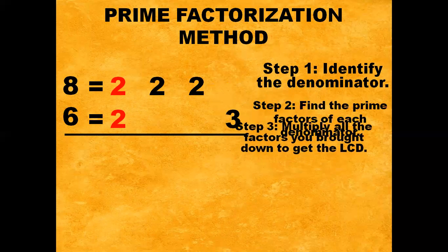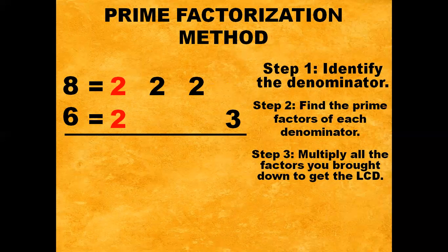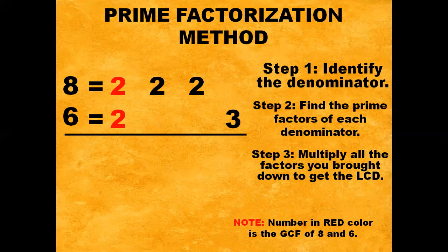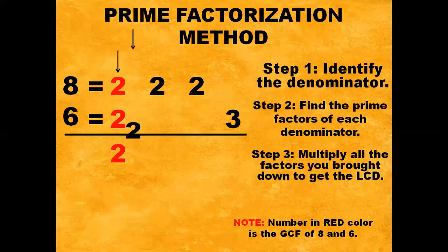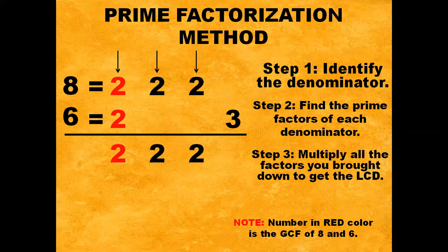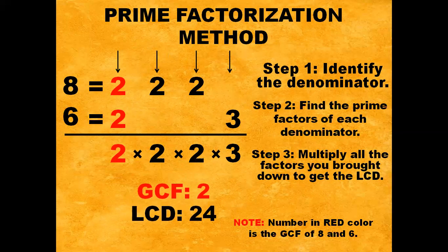Step number three: multiply all the factors brought down to get the LCD. Note that the number in red is the GCF or Greatest Common Factor of eight and six. For the first column, bring down two; second column, bring down two; third column, bring down two; fourth column, bring down three. Two times two times two times three gives us an LCD of 24, and the GCF is two.